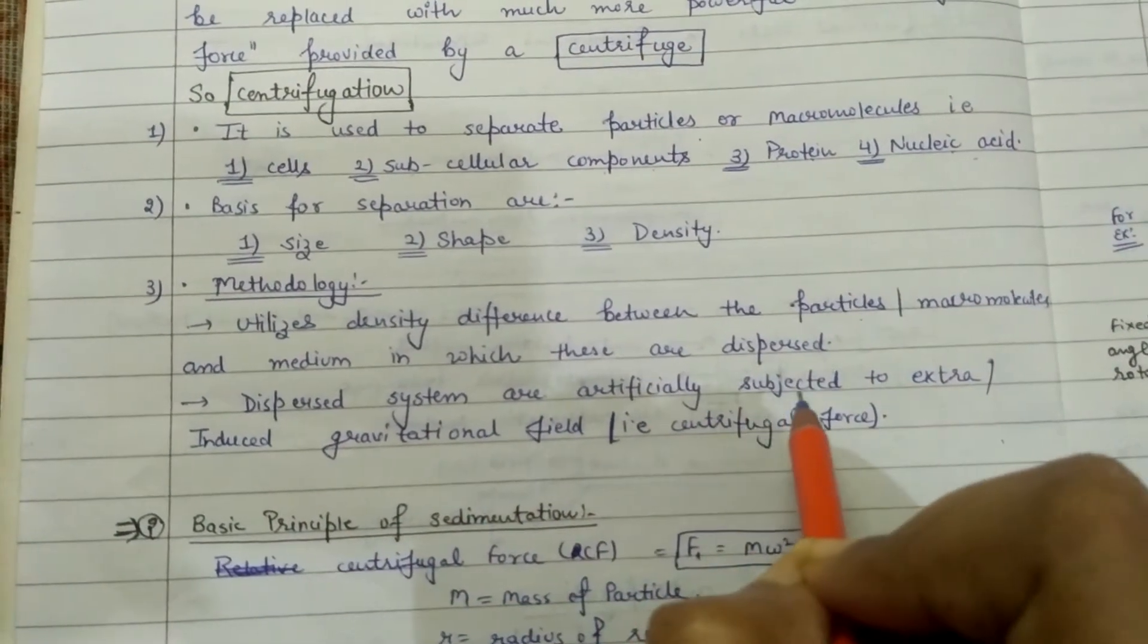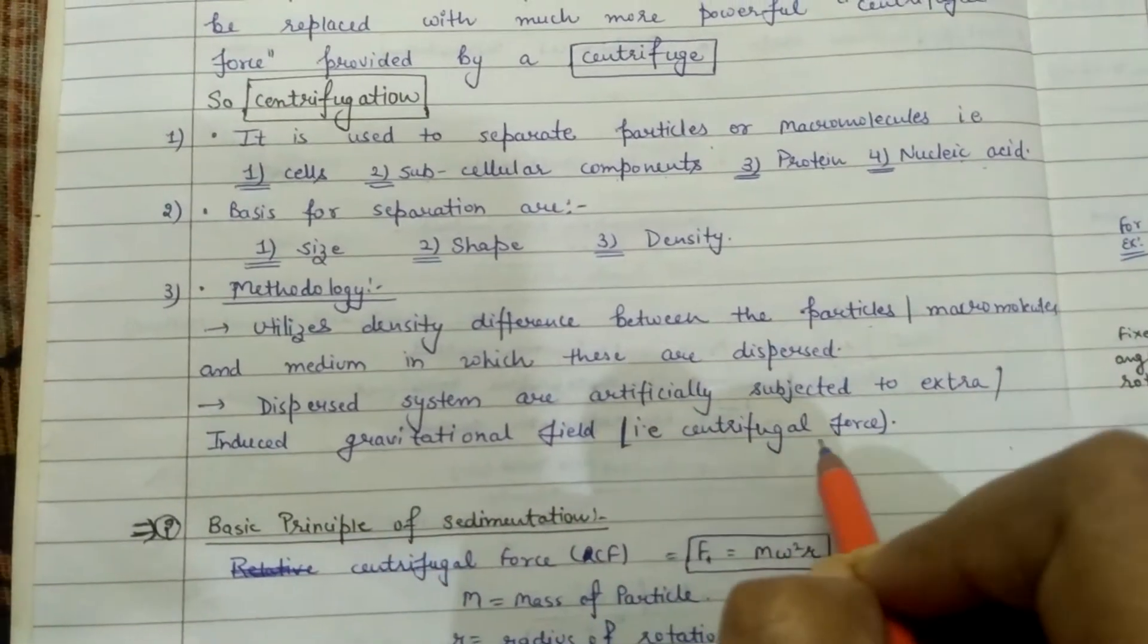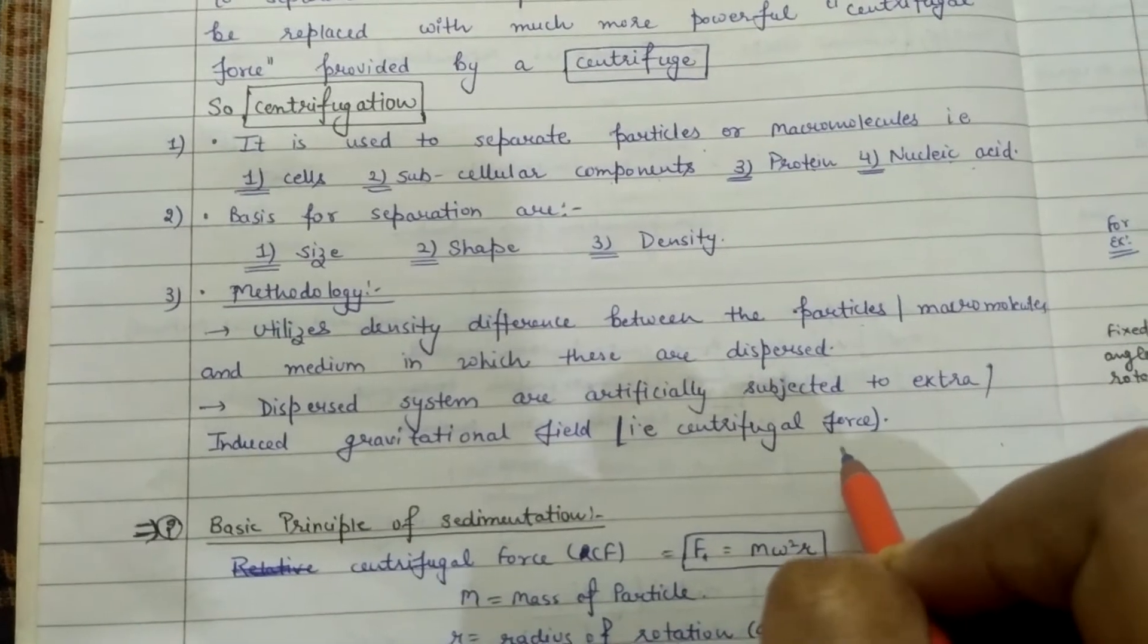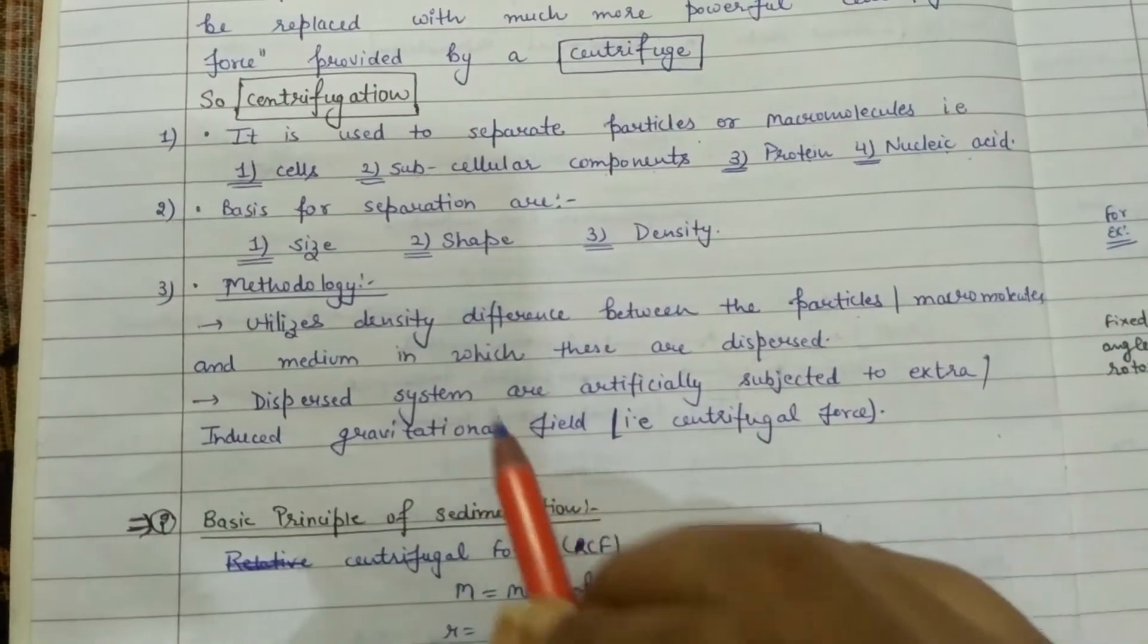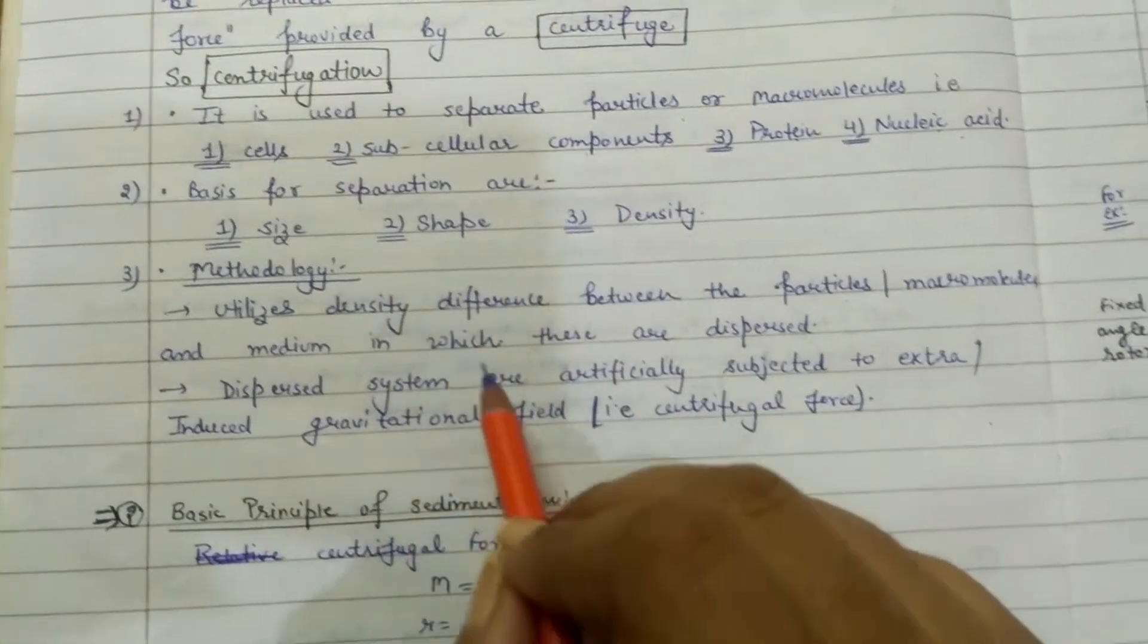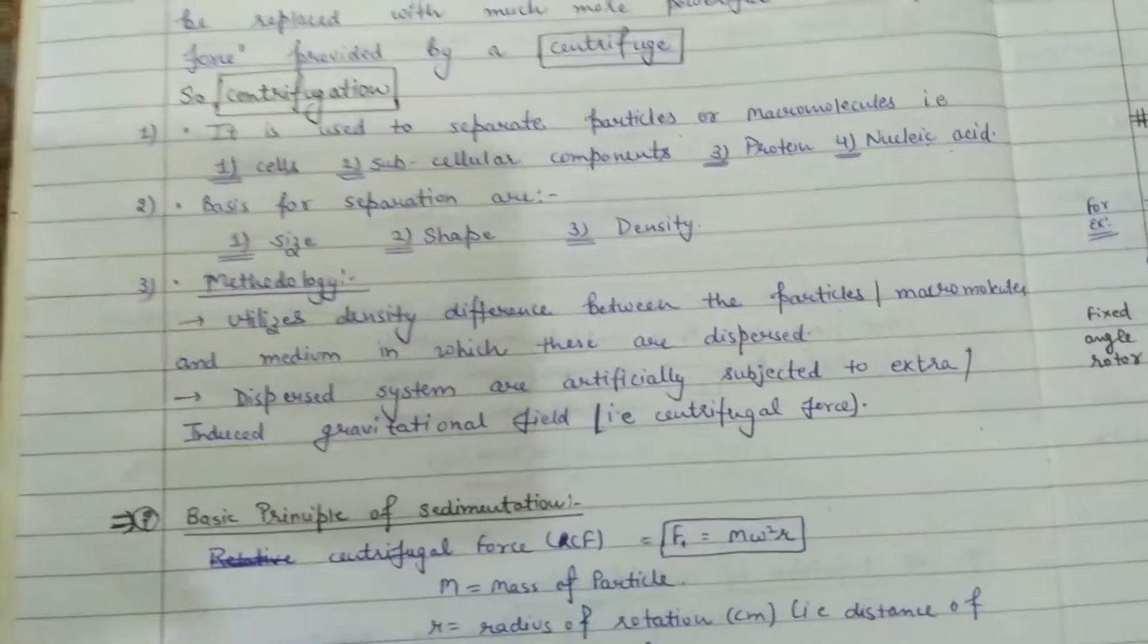Second, dispersed systems are artificially subjected to an induced gravitational field, which we call centrifugal force. When we provide centrifugal force, it will be a very powerful force and the particles will be separated easily.